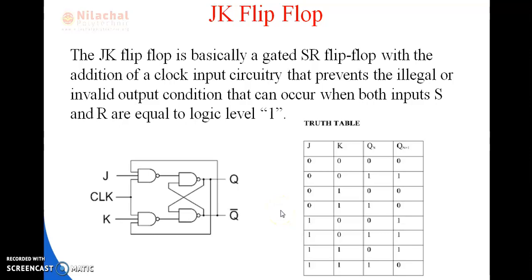When J equals 1 and K equals 1, both inputs are 1, the output is in the complement form. The advantage of JK flip-flop is that the invalid condition in SR flip-flop is eliminated by applying one clock pulse. The disadvantage of JK flip-flop is that when the clock pulse is wide and J equals K equals 1, the output fluctuates between 0 and 1.